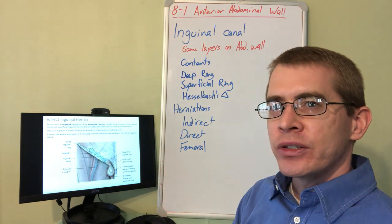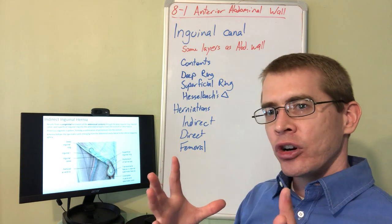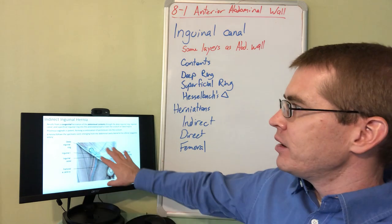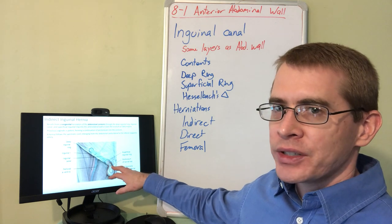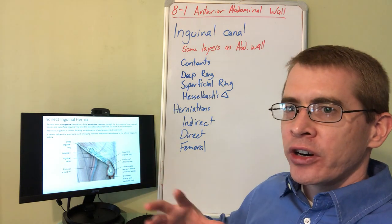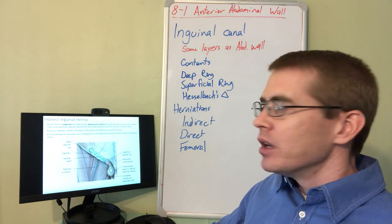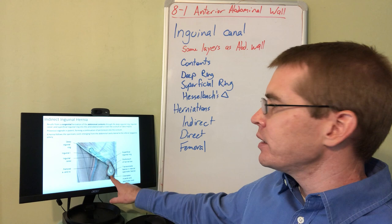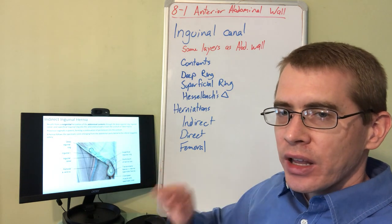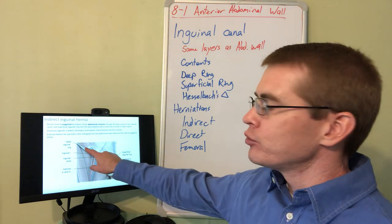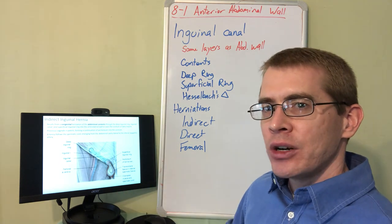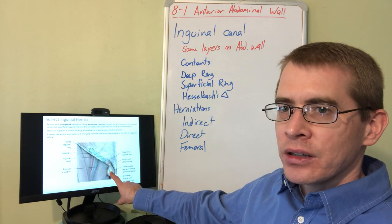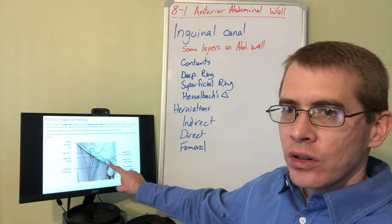Now let's discuss herniations related to the inguinal canal. Herniations can occur throughout the body due to increased abdominal pressure, but the most common ones are in the inguinal canal because it is already an open process. The first type is an indirect inguinal hernia. It travels indirectly within the spermatic cord — it does not pierce any fascia, but rather represents abdominal contents that traveled with the spermatic cord during development. This is essentially a portion of the intestines located within the spermatic cord.